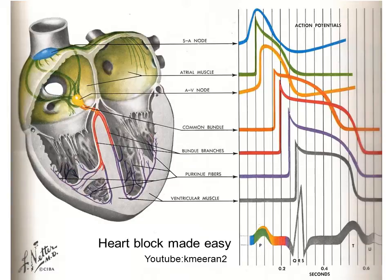However, every single wave will get through this point. On the other hand, in second degree heart block the ischemia is slightly worse so that some of the beats don't get through.